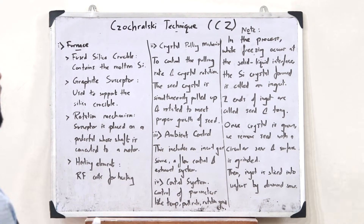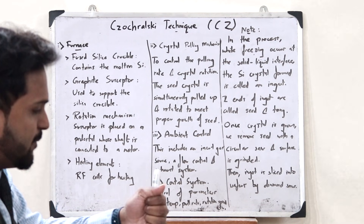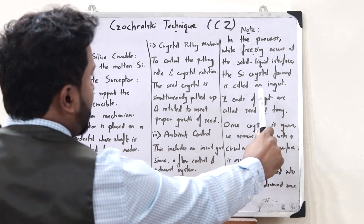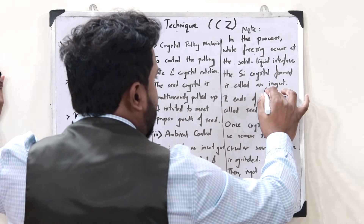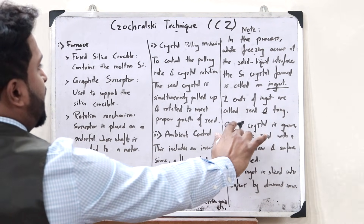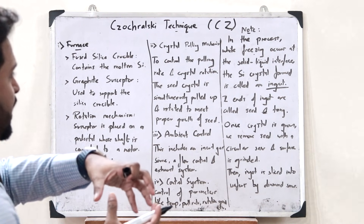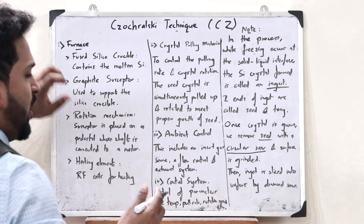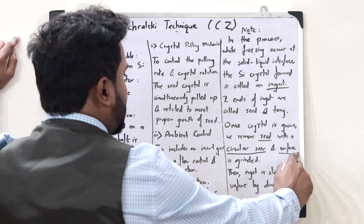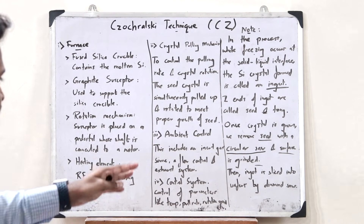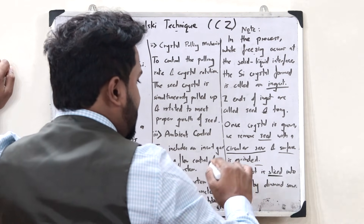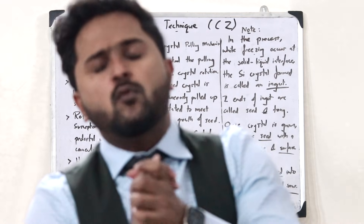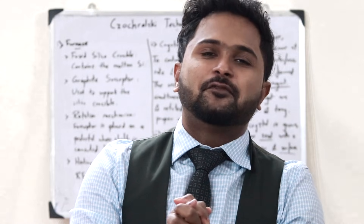Finally, it has a control system to control parameters like temperature, pull rate, rotation speed, etc. An important note: in the Czochralski technique, while the seed is slowly pulled up and the silicon crystal is being formed, freezing occurs at the solid-liquid interface, and the silicon crystal formed is referred to as an ingot. The two ends of this ingot are called the seed and the tang. Once the crystal is fully grown, we remove the seed end using a circular saw, then the surface is ground to make it smooth. After grinding, this ingot is sliced into different wafers with the help of a diamond saw.